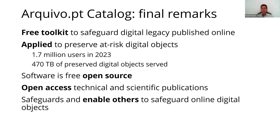To conclude, the Archive.pt catalog is a free toolkit of practical and innovative services to safeguard the digital legacy published online. This catalog has been used in practice to preserve at-risk digital objects. In 2023, we received 1.7 million users and provided access to 470 terabytes of data. All our software is free and open source, all our publications are available in open access. The Archive.pt catalog enables anyone to contribute to safeguarding the online digital legacy. Thank you.